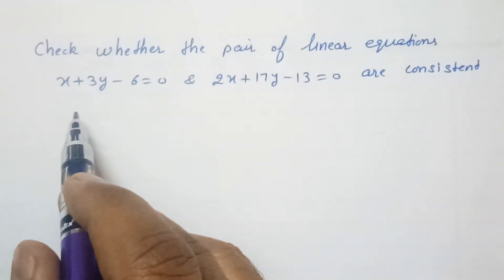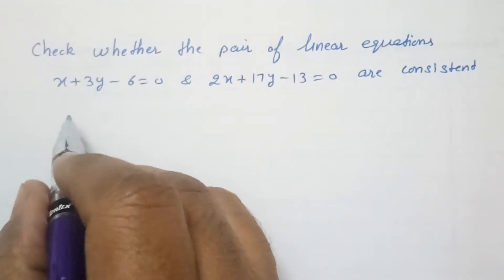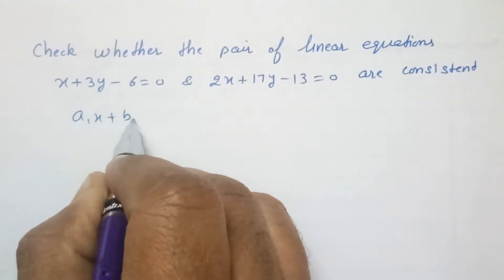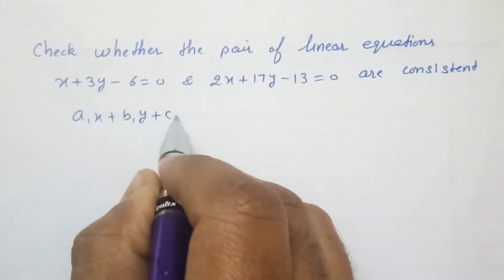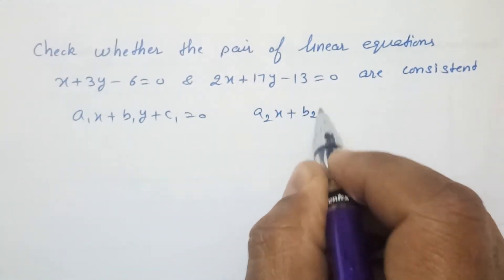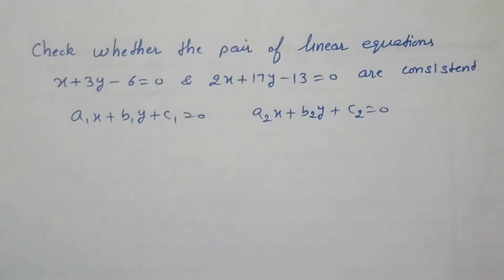So, for consistency, what we have to do? First of all, I will tell you the standard form. The standard form of the equation is a1x plus b1y plus c1 equal to 0, and a2x plus b2y plus c2 equal to 0. This is the standard form.